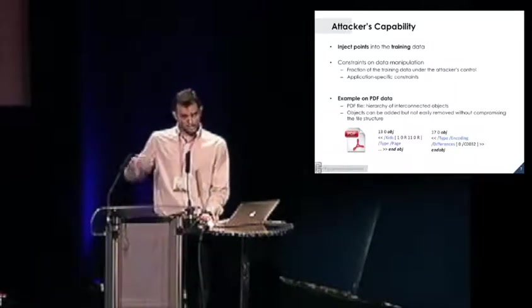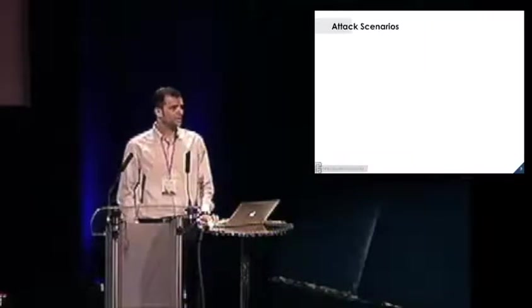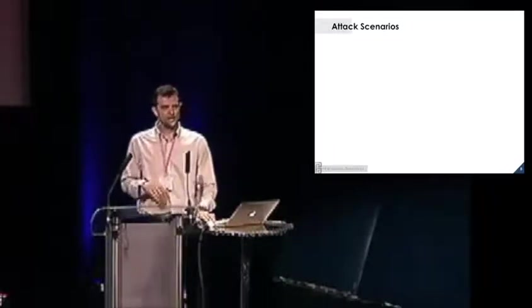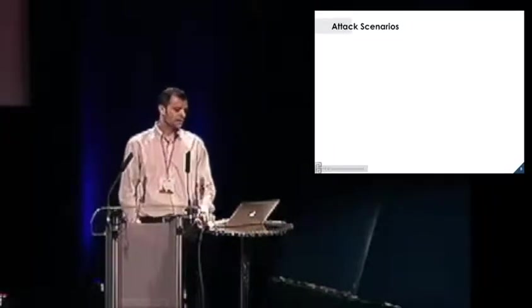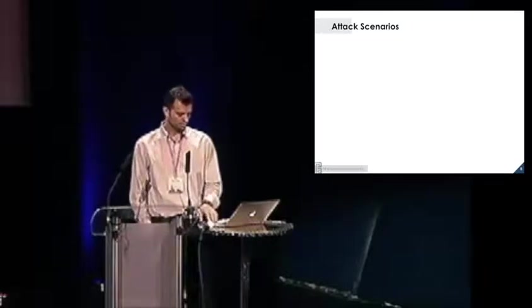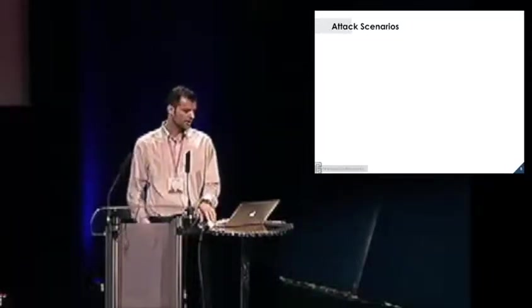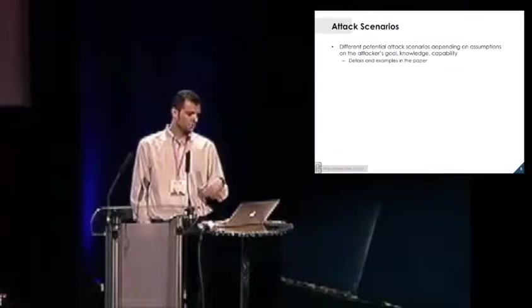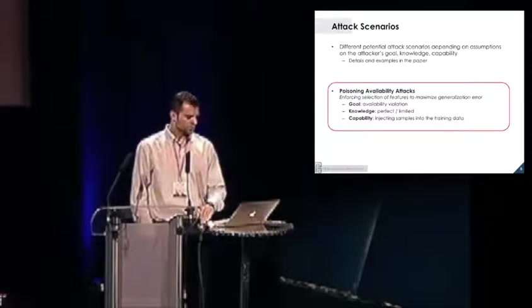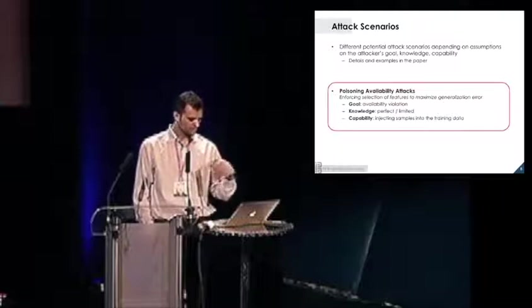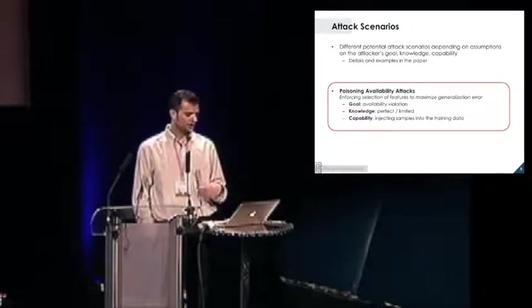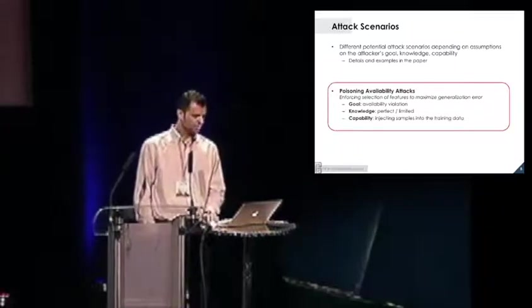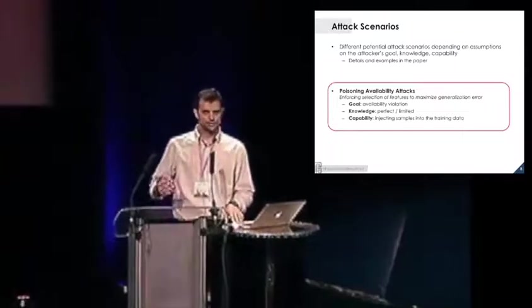So given these assumptions on the attacker's goal, knowledge, and capability, you can think of different potential attack scenarios against feature selection algorithms. We sketch a few in the paper. We're just focusing on the case study we presented also in the paper, which is about what we call poisoning availability attacks. So here the attacker can inject samples into the training data, and the goal is to cause an availability violation. That means to enforce the selection of features in order to maximize the generalization error. The goal is to cause a denial of service.